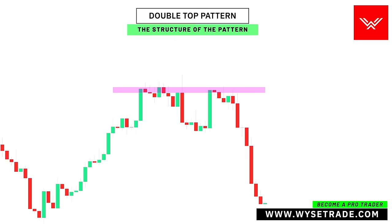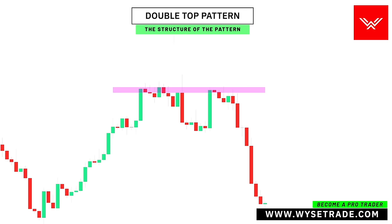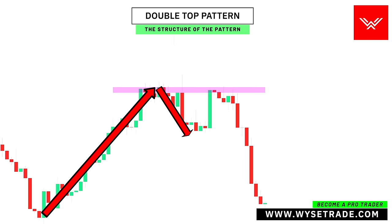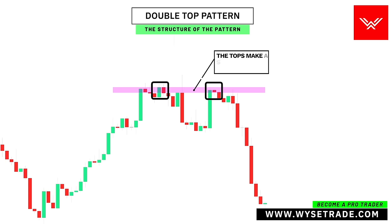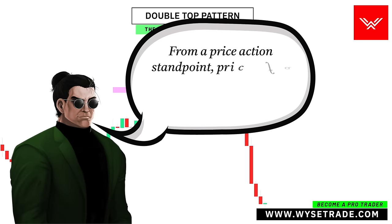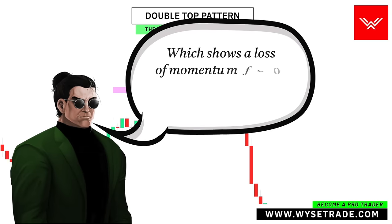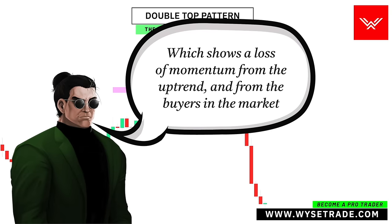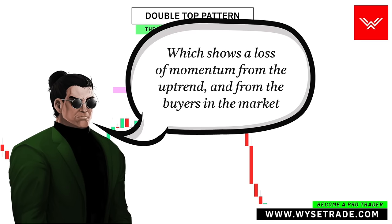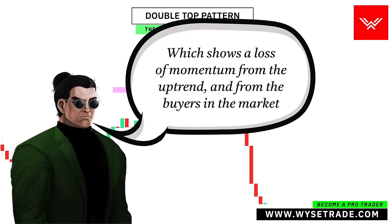Starting with the double top pattern, you first have your moving uptrend. Price then makes two same highs. The tops essentially make a resistance level. From a price action standpoint, price failed to make a higher high, but instead made a same high, which shows a loss of momentum from the uptrend and from the buyers in the market.